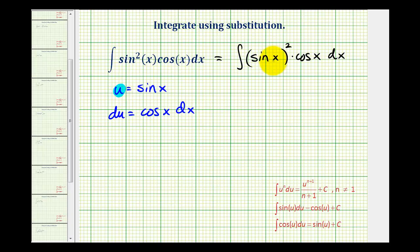If u is equal to sine x, this would be u squared. And then notice that we're left with cosine x dx, which is equal to du.